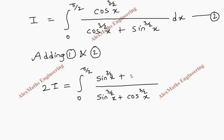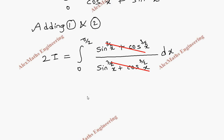The combined numerator becomes sin^(3/2)(x) plus cos^(3/2)(x), which is the same as the denominator. We can cancel them, and we are left with just dx. The integration of dx is x, and we substitute the limits: upper limit minus lower limit.